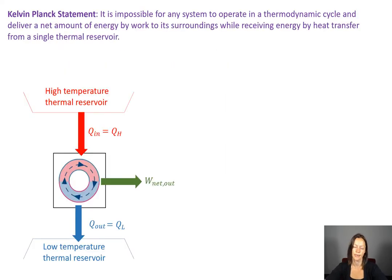So the Kelvin Planck statement says that it's impossible for any system to operate in a thermodynamic cycle and deliver a net amount of energy by work to its surroundings while receiving energy by heat transfer from a single thermal reservoir. That's a lot of words. So let's sort of back up just a little bit. And let's look at the picture here. So we've got a heat engine or a power cycle and it's cycling along.